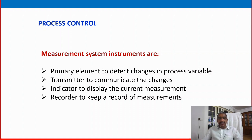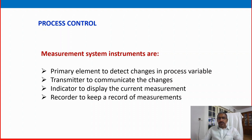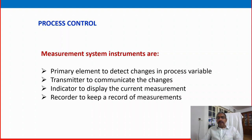If you have missed those videos, please go through, subscribe, and watch what is a primary element and how to detect changes in process variable like pressure, temperature, level, and flow. Understand that first, then only you can get continuation and learn the process instrumentation. Once the primary element detects the real process variable signal like pressure, temperature, level, and flow, it will transfer to the transmitter.